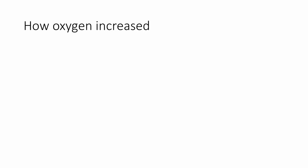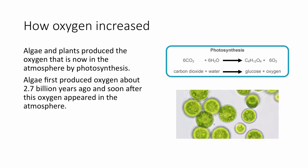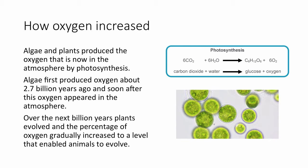How did oxygen increase? Algae and plants produced oxygen now in the atmosphere by the process of photosynthesis — they took in carbon dioxide, water, and sunlight to form glucose and oxygen. Algae first produced oxygen 2.7 billion years ago, and soon after, oxygen appeared in the atmosphere. Over the next billion years, plants evolved and the percentage of oxygen gradually increased to a level that enabled animals to evolve.